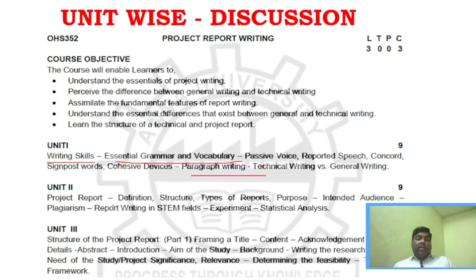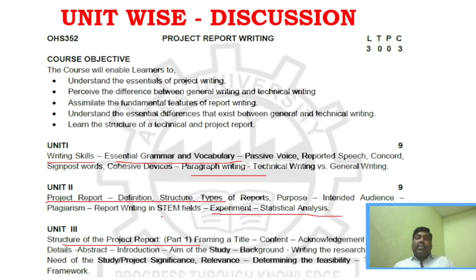Unit two covers static analysis, also making three areas. Unit three covers the structure of project report one — that is one of the most important areas. It includes framing a title, acknowledging content, funding, the need for the subject, study, project significance and relevance, and theoretical framework. These are the key areas in unit three.